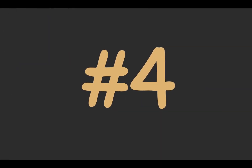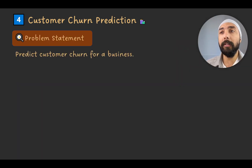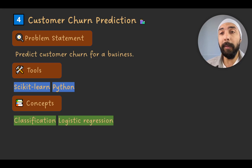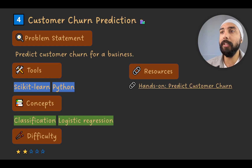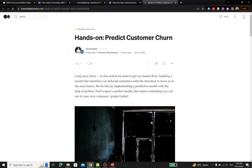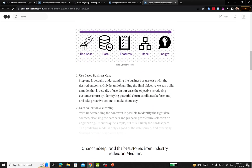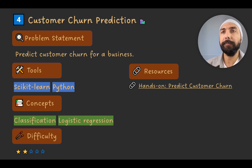Project number four is customer churn prediction. You would predict customer churn for a hypothetical business using scikit-learn and Python, implementing classification and logistic regression. The difficulty level is 2 out of 5 — a beginner-friendly project. The resource is a Towards Data Science article, 'Hands-on: Predict Customer Churn,' though you may need a premium subscription or can find similar articles elsewhere.